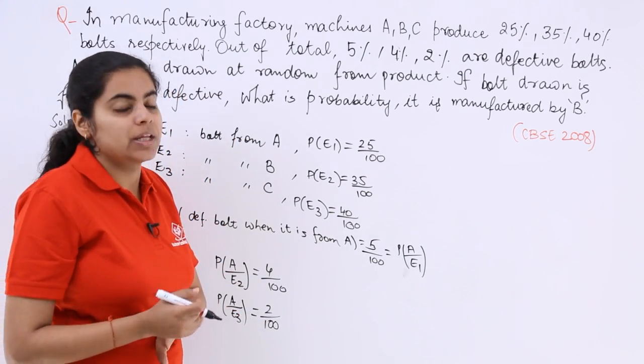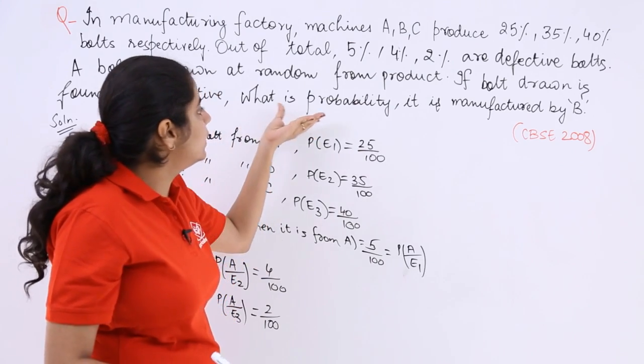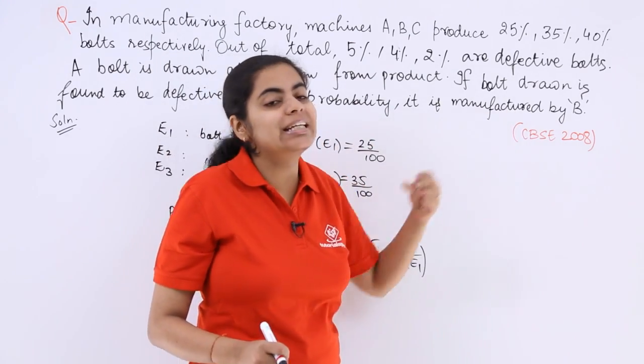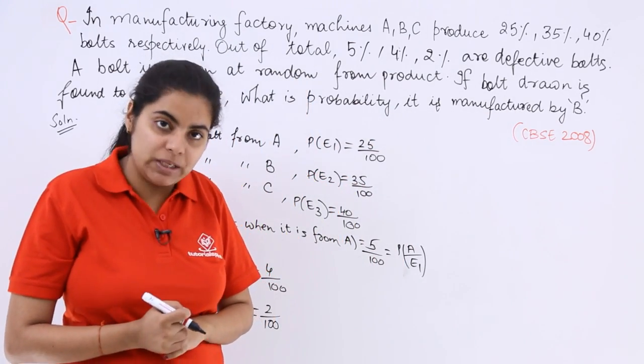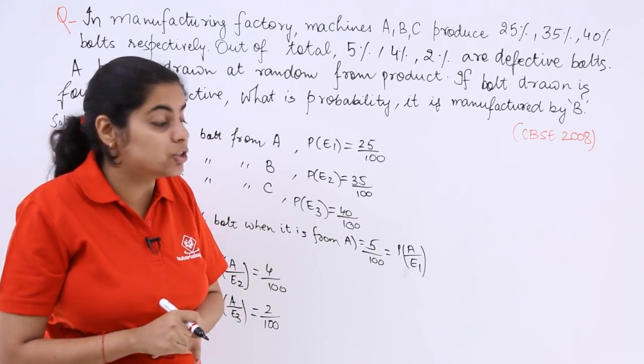Now we have to know that if the bolt is defective, what is the probability it is manufactured by B?